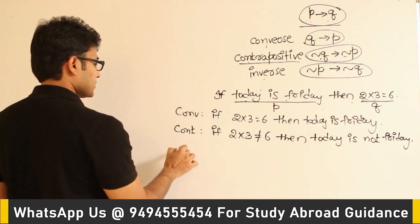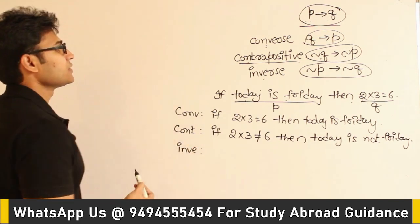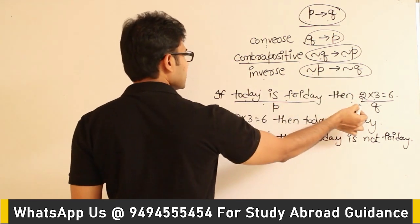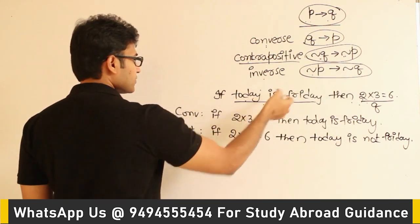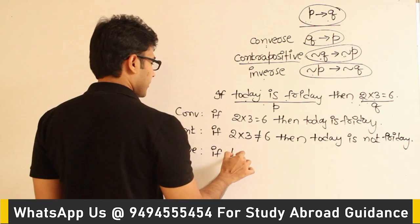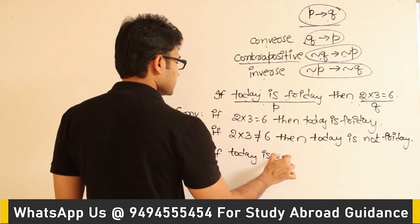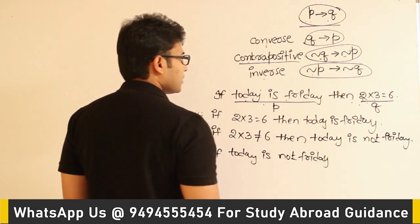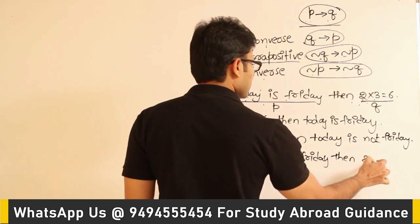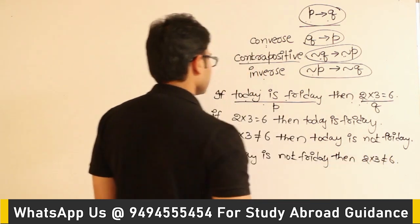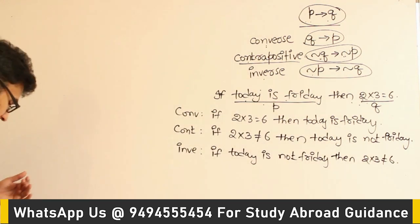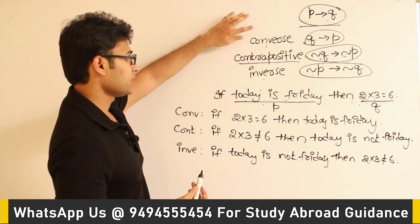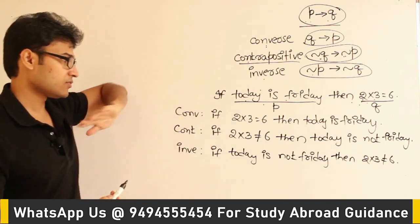What about inverse? Inverse is negation P implies negation Q. If this is P and this is Q, then negation P is: today is not Friday, and negation Q is: 2 into 3 is not 6. So one type of question is: they give you a statement P implies Q and ask you for the converse, contrapositive, or inverse.